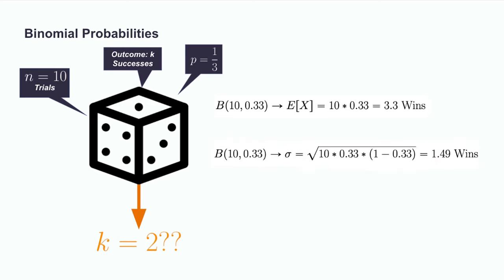But another way to figure out how outside the ordinary this outcome is would be to calculate the standard deviation. If we do so, we find that the standard deviation for this random variable is 1.49 wins. Therefore, our outcome is still less than our standard deviation away from the mean. This suggests that our result is within the realm of random chance, further reinforcing our earlier calculation, which says that we have two wins about 20% of the time.